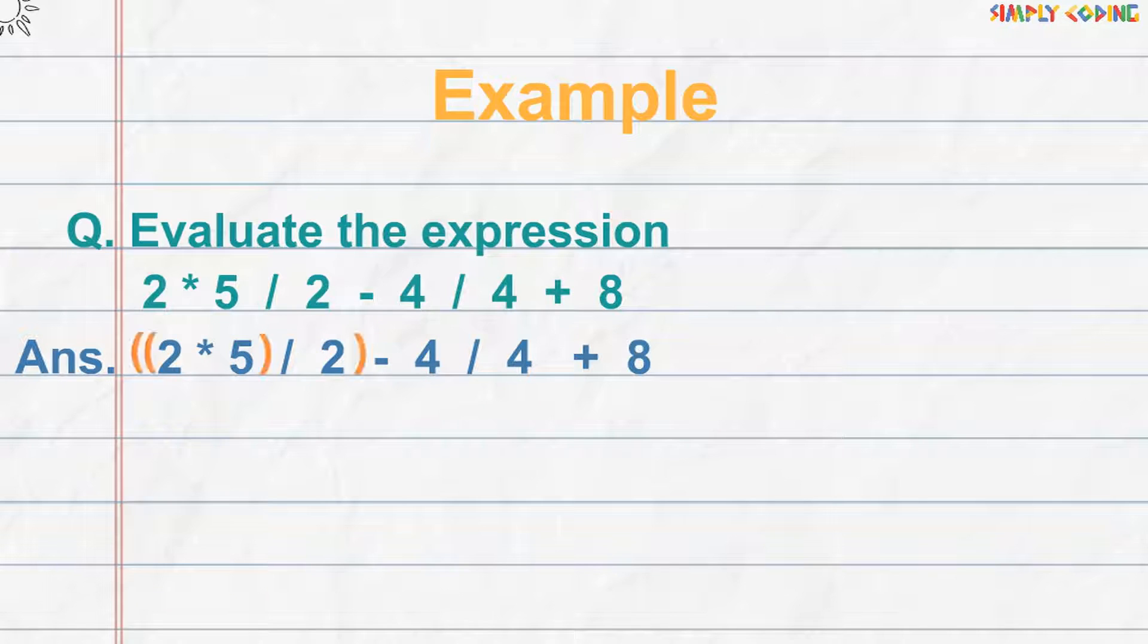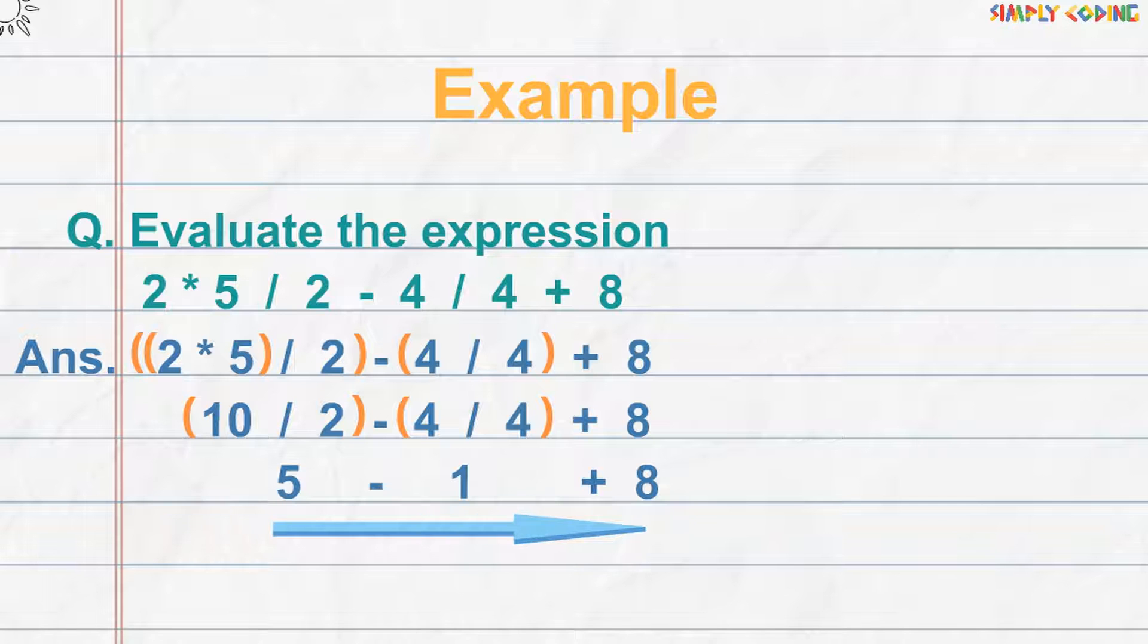To solve this, put the brackets first and then solve each precedence in a separate line wherever possible. Once you have solved the multiplication and division, move to the next precedence of plus and minus, which is also evaluated left to right as per the associativity rules. This gives us the answer.